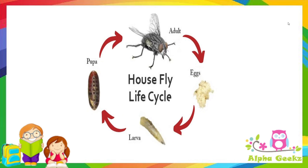Life cycle of a housefly: the adult housefly lays eggs and the young ones are called larvae. They turn into pupa and then into an adult housefly.